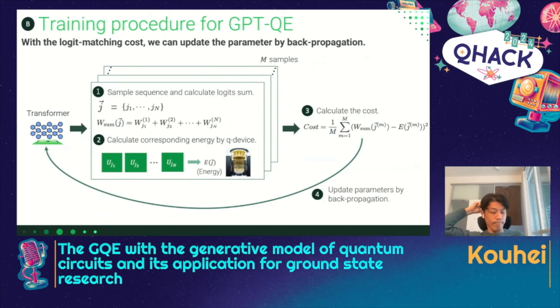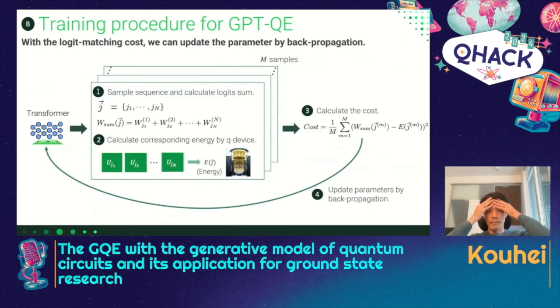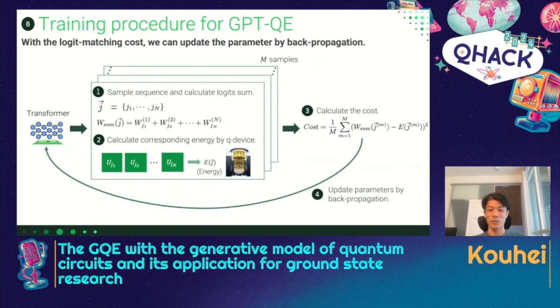One more question from Quantum Palace: which part is quantum and which part is classical? The generating algorithm is 100% classical and the energy landscape is quantum. Yes, that's true. The only place quantum is involved is the energy calculation part.